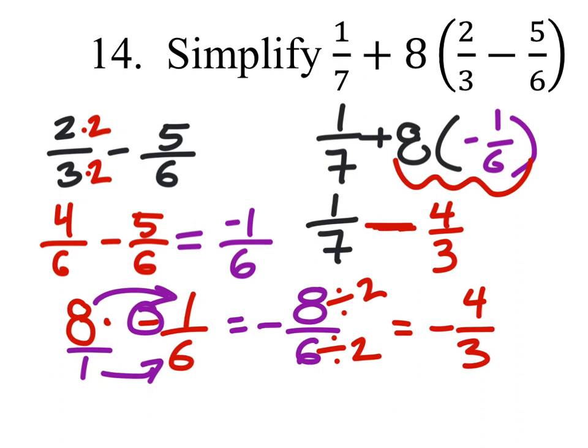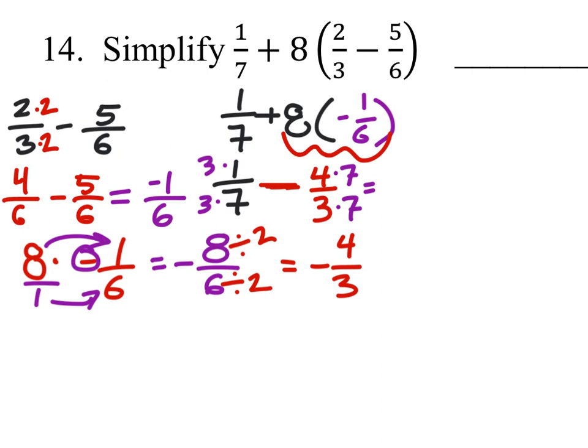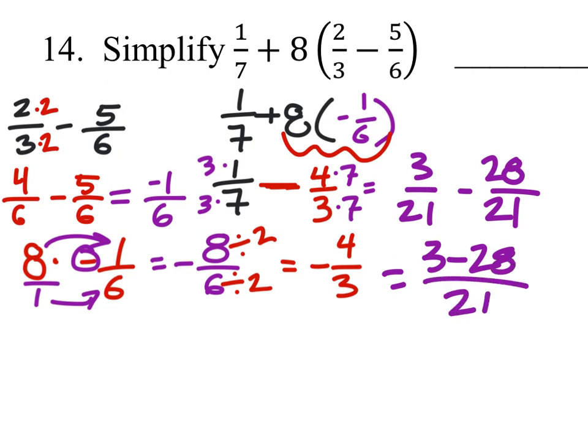Well, we need common denominators once again. So we'll use 21. Multiply these both by 7, multiply these both by 3. And that gives us 3/21 minus 28/21. And that gives us 3 minus 28 over 21, which is negative 25/21.